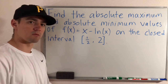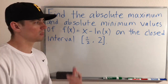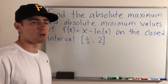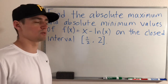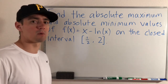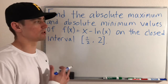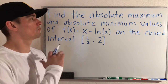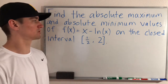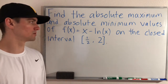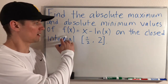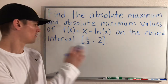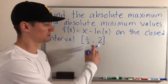Hey guys, Jake here coming at you with another math problem today. Here's the problem I'm going to be showing you today, carrying on with the theme of absolute and local maximum and minimum values of a function. I'm going to show you an example of how to find the absolute maximum and absolute minimum values of f of x equals x minus ln of x on the closed interval one half to two.